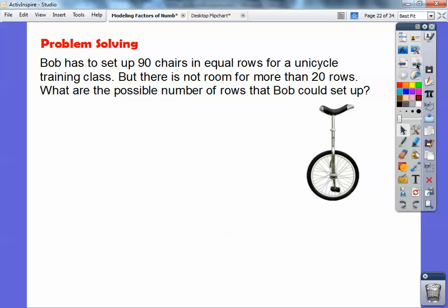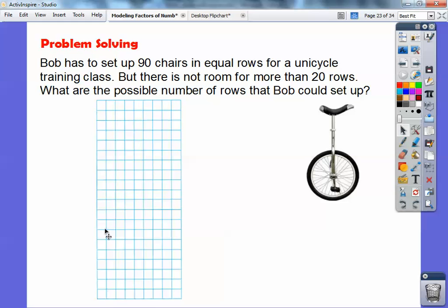Alright, and then here's the last one here. Bob has to set up 90 chairs in equal rows for unicycle training class. But there's not room for more than 20 rows. So, what are the possible numbers of rows that Bob could set up? Okay, so his maximum amount of people in a row is 20. So, here's a grid where there's 20 rows right here. And we're going to use this grid to show the possible factors of 90, okay? And it said they had to be in equal rows. So, you couldn't have like, you know, one row with only one person in it. They had to have the same amount of people in each row. So, it's basically we're going to draw some rectangles here. So, we know 1 times 90 equals 90. But what's the matter with this picture right here? Okay, I can't use this one right here because 90 is over 20. And it says there's not enough room for more than 20 rows. So, I can't have, you know, one column with 90 rows on it because it can't be more than 20.